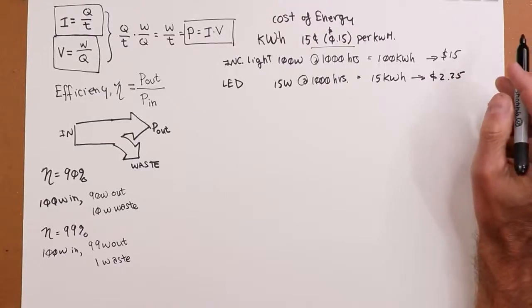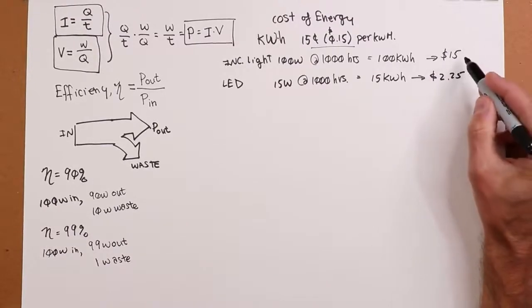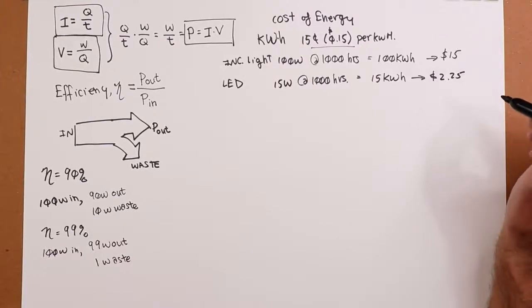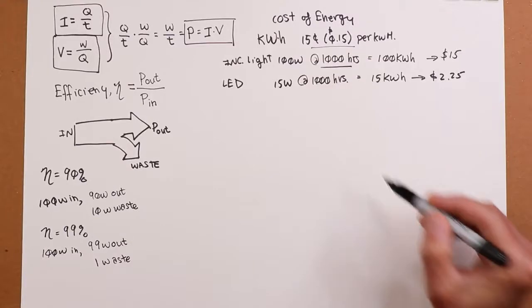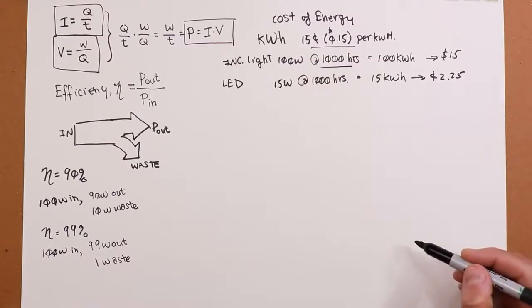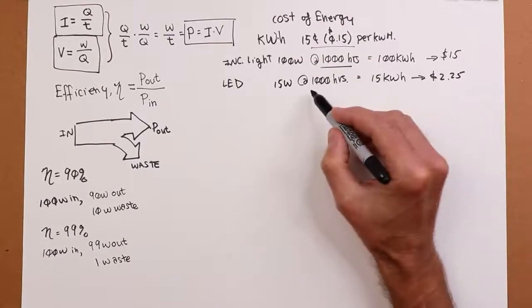Now, that's a pretty large change there. Now, you might argue, oh, but LED light bulbs are more expensive than incandescent light bulbs are. I can get these things real cheap. Yeah, that's true. However, those lights only last about 1,000 hours.